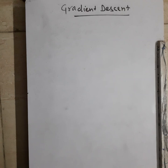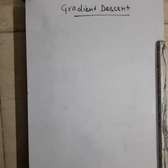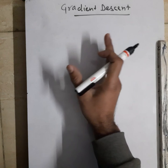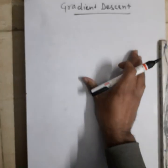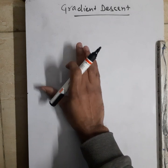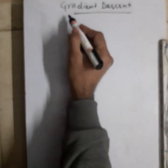We will do the mathematical concepts on today's whiteboard, and the actual implementation using Python code we will do in the next video. Before moving on to gradient descent, let me tell you that gradient descent is a really important concept in machine learning and it is very interesting as well. I will first give you the official definition and then we'll move on to some examples.